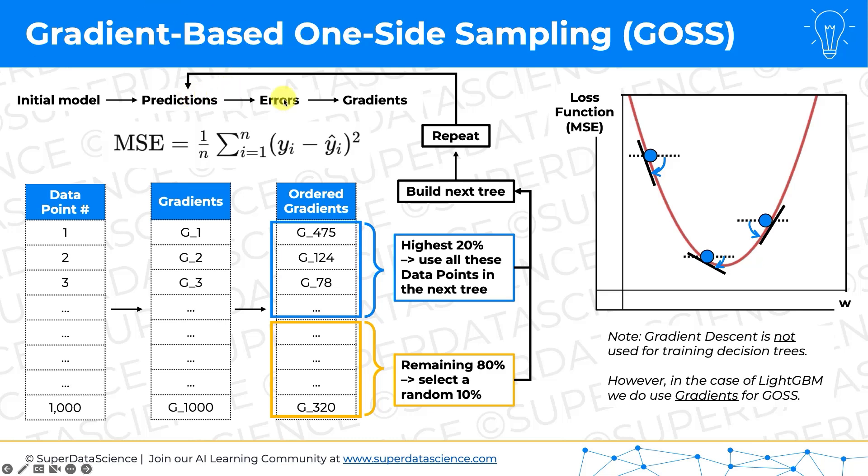Then we repeat the whole process: get the predictions, get the errors, get the gradients, and do all of this again. So every time we're subsampling our data — looking at some of the rows instead of all of them — but we're doing it in a smart way. That smart way is called gradient-based one-side sampling, and it makes this algorithm more efficient.